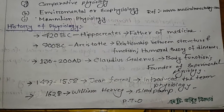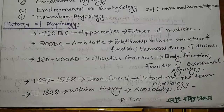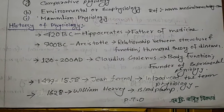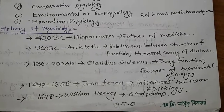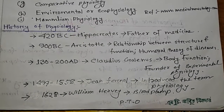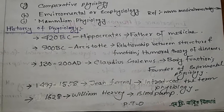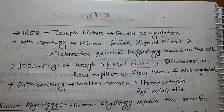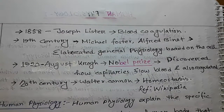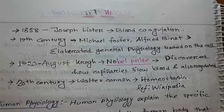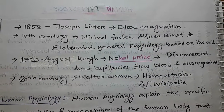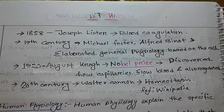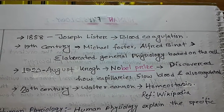Some information about the History of Physiology. Around 420 B.C., Hippocrates, the Father of Medicine. In 1858, Joseph Lister worked on blood coagulation. In the 19th century, Michael Foster and Alfred Bennett elaborated general physiology based on the cell. In 1920, August Krogh won the Nobel Prize, having discovered how capillaries flow and regulate blood. In the 20th century, Walter Cannon discovered homeostasis.